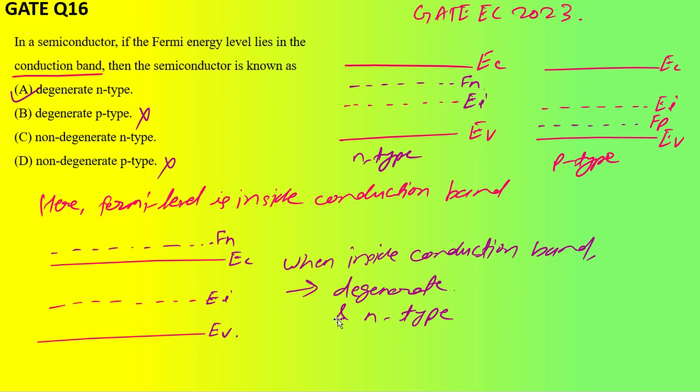When inside the conduction band, it will become degenerate type as well as n-type. So option A is correct. For n-type, when we move up, it becomes n-type. When we move down, it becomes p-type. I have given you a great explanation why this is going up for n-type, why this is going down for p-type.